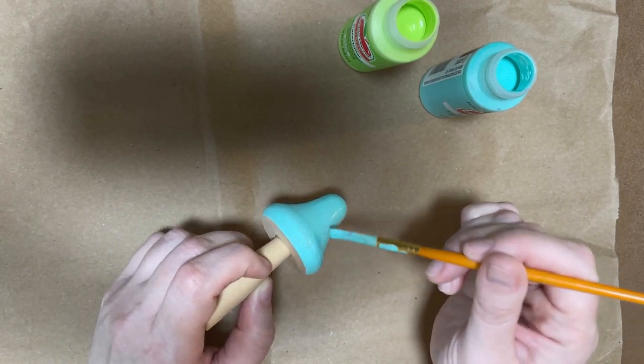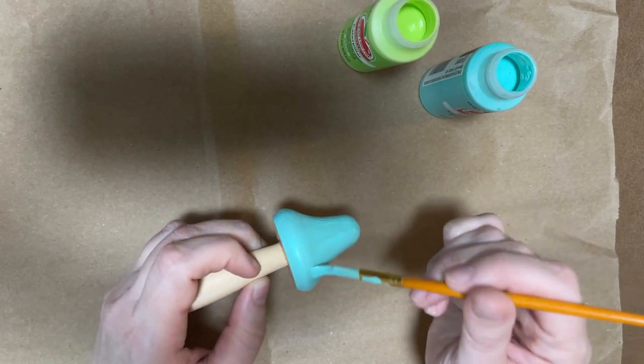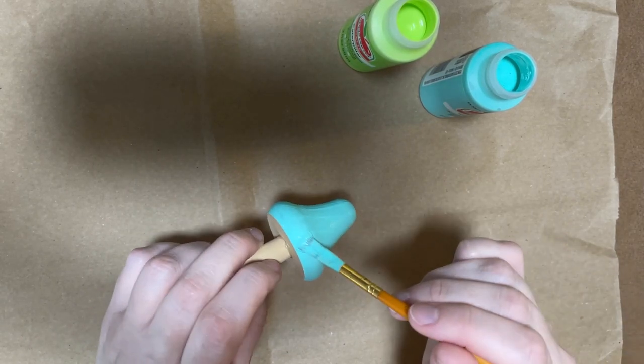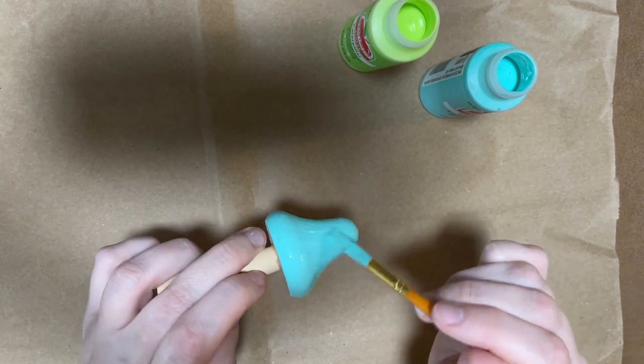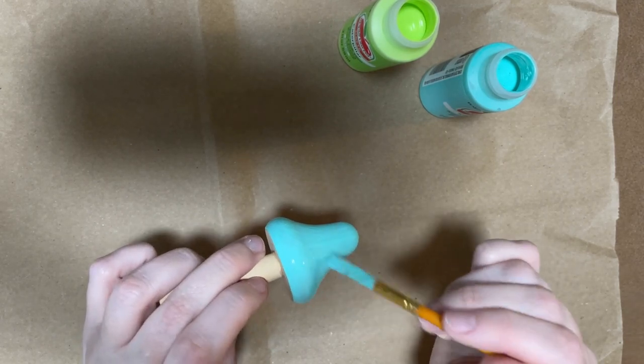So once you've got your first coat of paint, you can use a blow dryer to dry it really quickly, or you can just leave it and let it dry completely on its own.